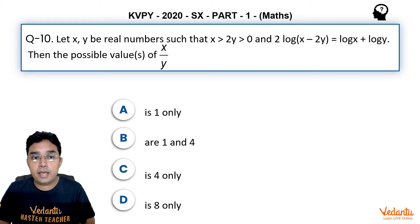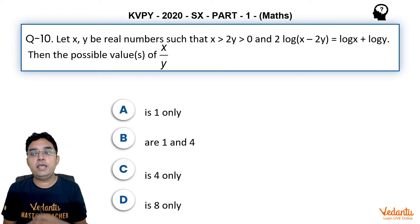The question says: Let x, y be real numbers such that x > 2y > 0 and 2 log(x - 2y) = log x + log y. Then the possible value(s) of x/y are—and we are given four options.